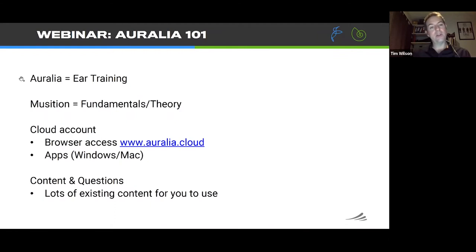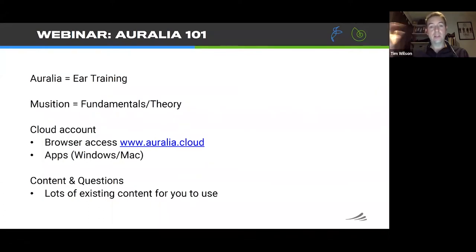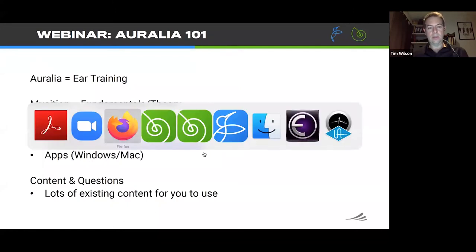For anyone joining for the first time: Aurelia is our ear training focused program, whereas Musician deals with fundamentals and theory content. A cloud account can be accessed in a number of ways. Instructors download and use the installed apps on Windows or Mac, which contain all the key administration features allowing you to control and assign specific content to students.